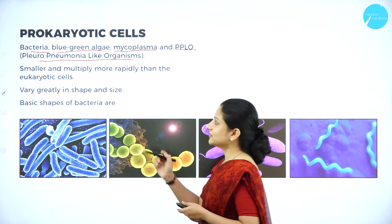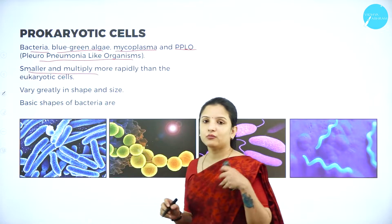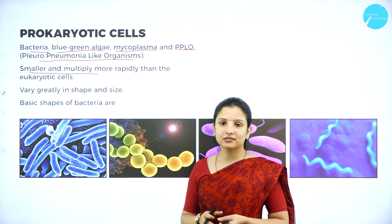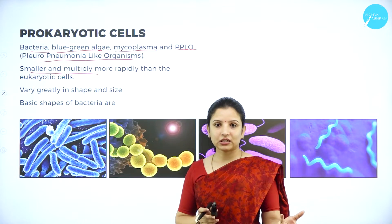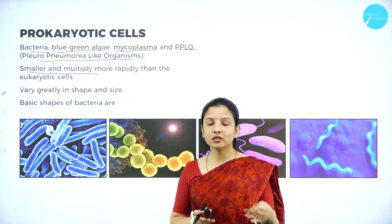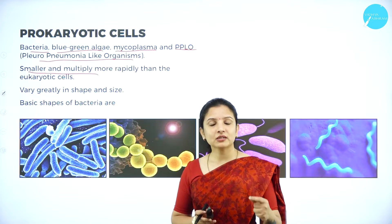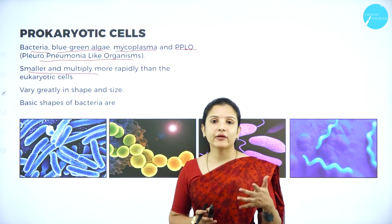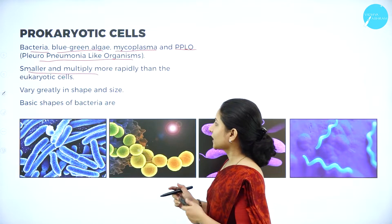Prokaryotic cells are very small and they multiply more rapidly than eukaryotic cells. Eukaryotes take time to multiply through various division processes, but prokaryotes can multiply within seconds or days — they can multiply very, very fast. That is one of their characteristic features.